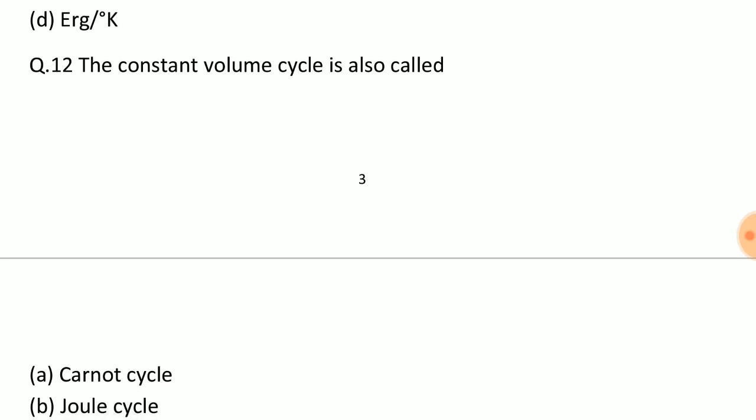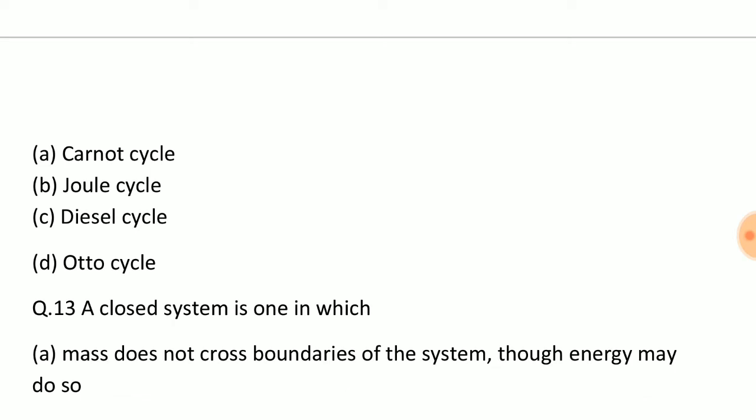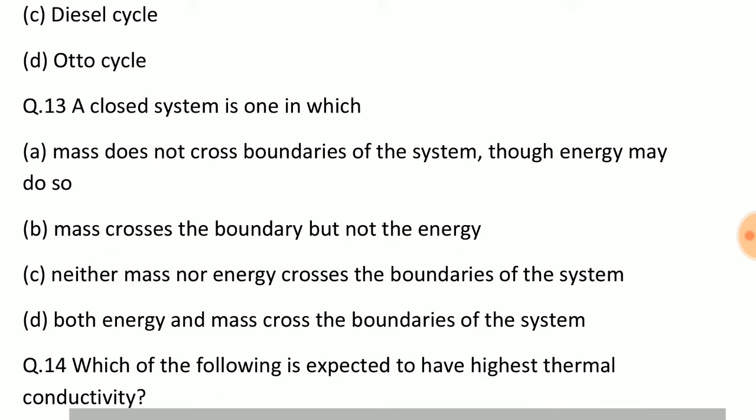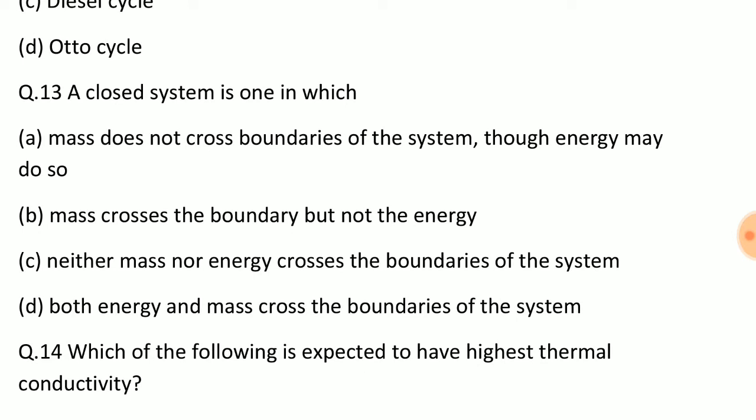Question: The unit of universal gas constant is? Answer: Option D, R per degree Kelvin. Question: The constant volume cycle is also called? Answer: Option D, Otto cycle. Question: A closed system is one in which? Answer: Option A, mass does not cross boundaries of the system though energy may do so.